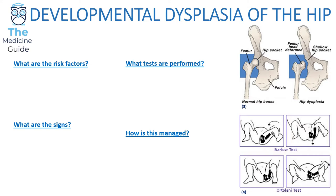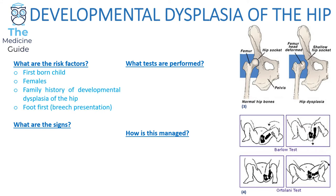Firstly, I'm going to start off by talking about developmental dysplasia of the hip. This is a situation where the femoral head hasn't properly articulated with the hip, meaning the femoral head doesn't lie completely within the acetabulum and is therefore easily dislocated. Risk factors involve the four F's: firstborn child, female, family history of developmental dysplasia of the hip, and foot first — so a breech presentation.